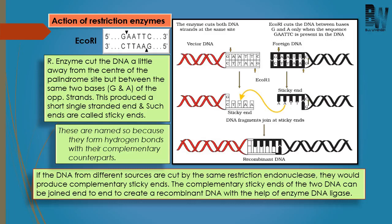EcoRI cuts the DNA at the backbone of its recognition sequence, but not in the center — it cuts away from the center, between the same nitrogen bases on the opposite strand, that is between G and A. Because this enzyme cuts the DNA away from the center, a short single-stranded overhanging DNA will be produced. This short single-stranded overhanging DNA is known as a sticky end.